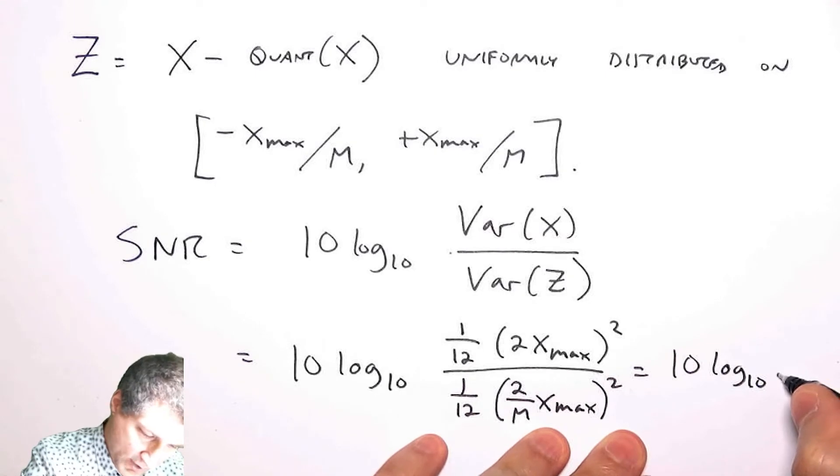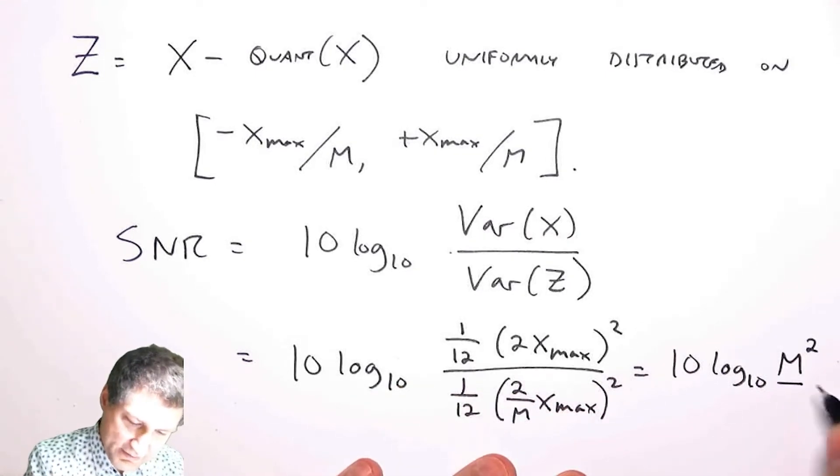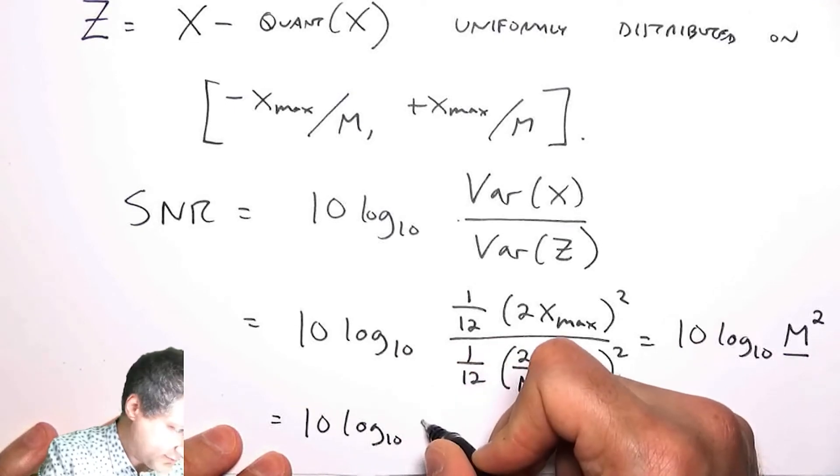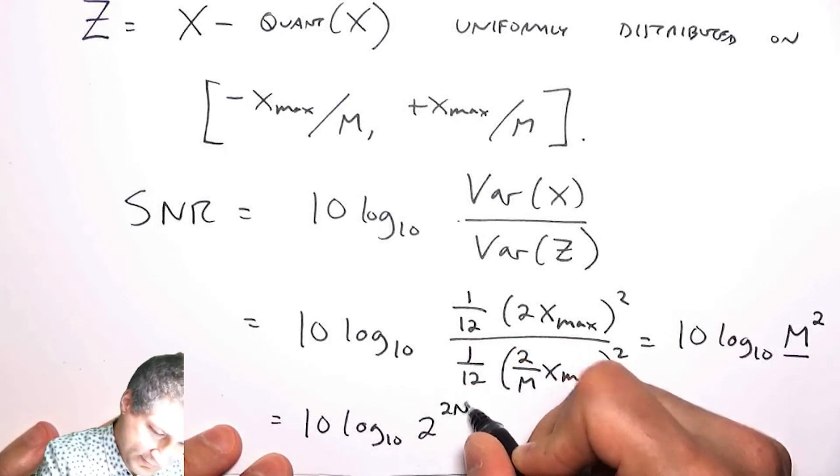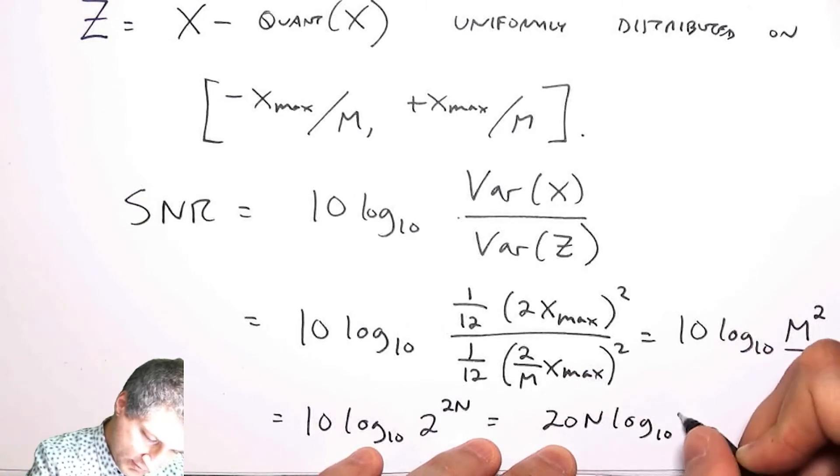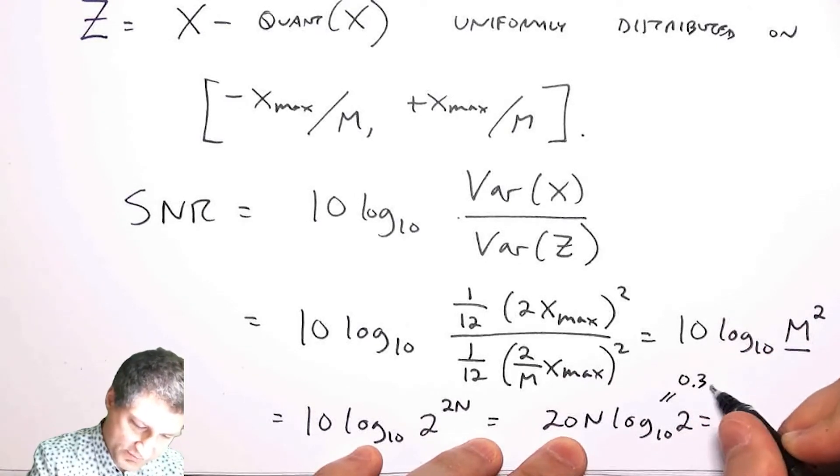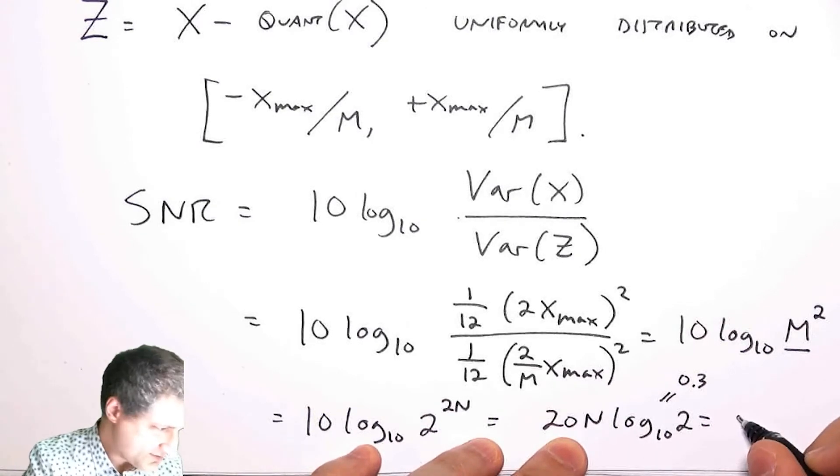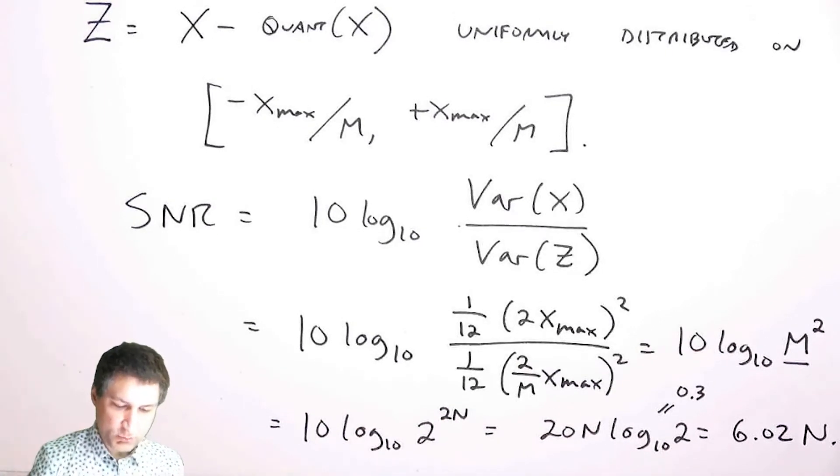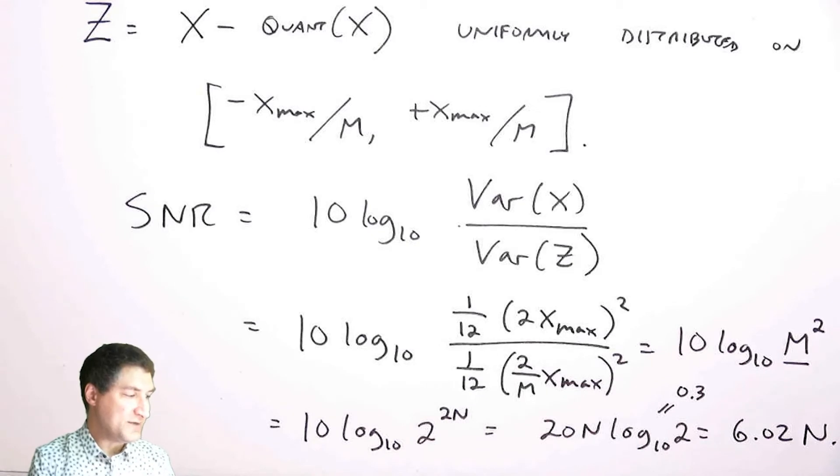Lots of things cancel out and what I get is 10 log_10 of M squared. Which if I think about M as 2 to some power, this is like saying I have 10 log_10 of 2 to the 2N, it's like 2 to the N squared. And this is like 20N log_10 of 2. Log_10 of 2, if you're an engineer you know, is approximately like 0.3, so 20N times this is 6.02N as it turns out. So what have I learned? I've learned that every bit of the quantizer that I add will increase my SNR by 6 dB. So this is this kind of rule of thumb that you sometimes hear in engineering: 6 dB per bit. This is where it comes from.